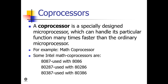A coprocessor is a specially designed microprocessor which can handle its particular function many times faster than an ordinary microprocessor. For example, the math coprocessor. Some Intel math coprocessors are the 8087 (used with the 8086), the 80287 (used with the 80286), and the 80387 (used with the 80386).